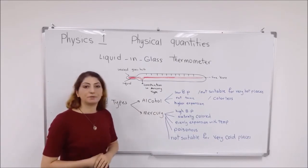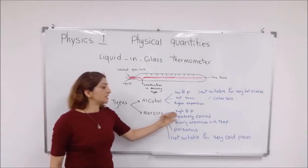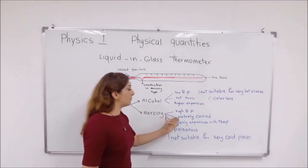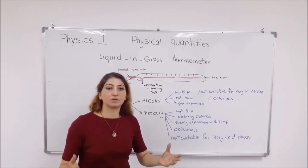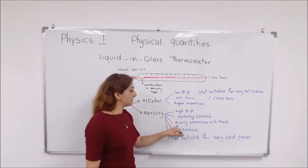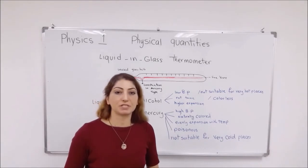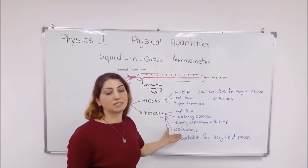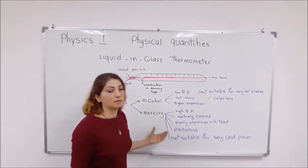But if you use mercury in the thermometer, it comes with these properties: it has a very high boiling point. So it is naturally colored, so you do not need to add any color or dye. And the expansion of it is evenly with temperature changes, another advantage. And it is poisonous, it is a kind of poisonous matter.